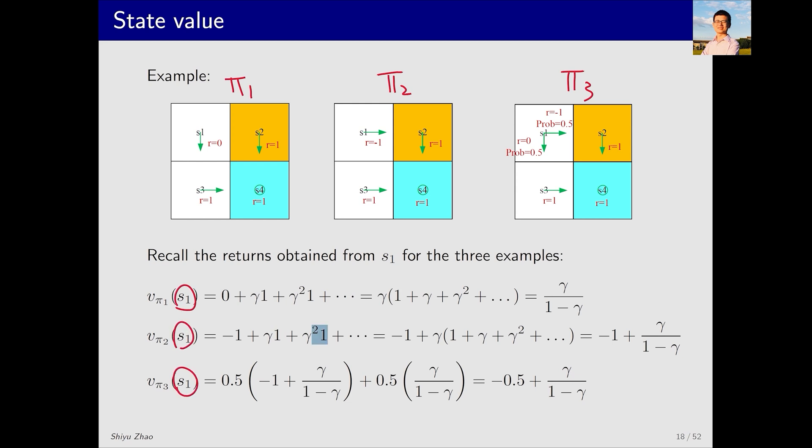The calculation is relatively simple, because for the first policy, the state value is straightforward. Starting from here, we will have a unique trajectory, and the return of this trajectory is its state value, which we have already calculated. The second state value is also simple, being the return along its trajectory. The third is slightly more complicated due to two possible trajectories. The state value is the average return for the two trajectories. This averaging is done by multiplying the probabilities in front, essentially calculating an expectation. Then we can obtain such a value.